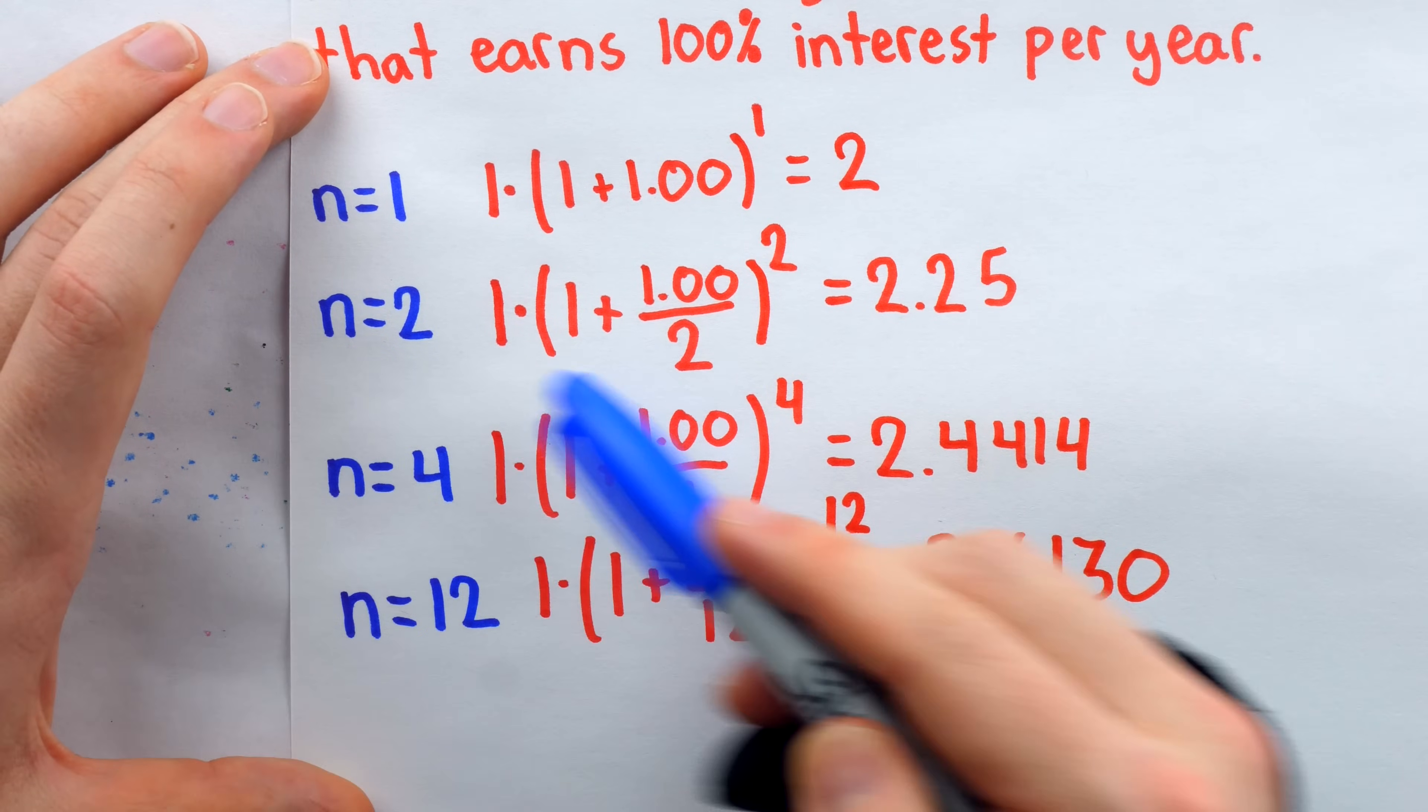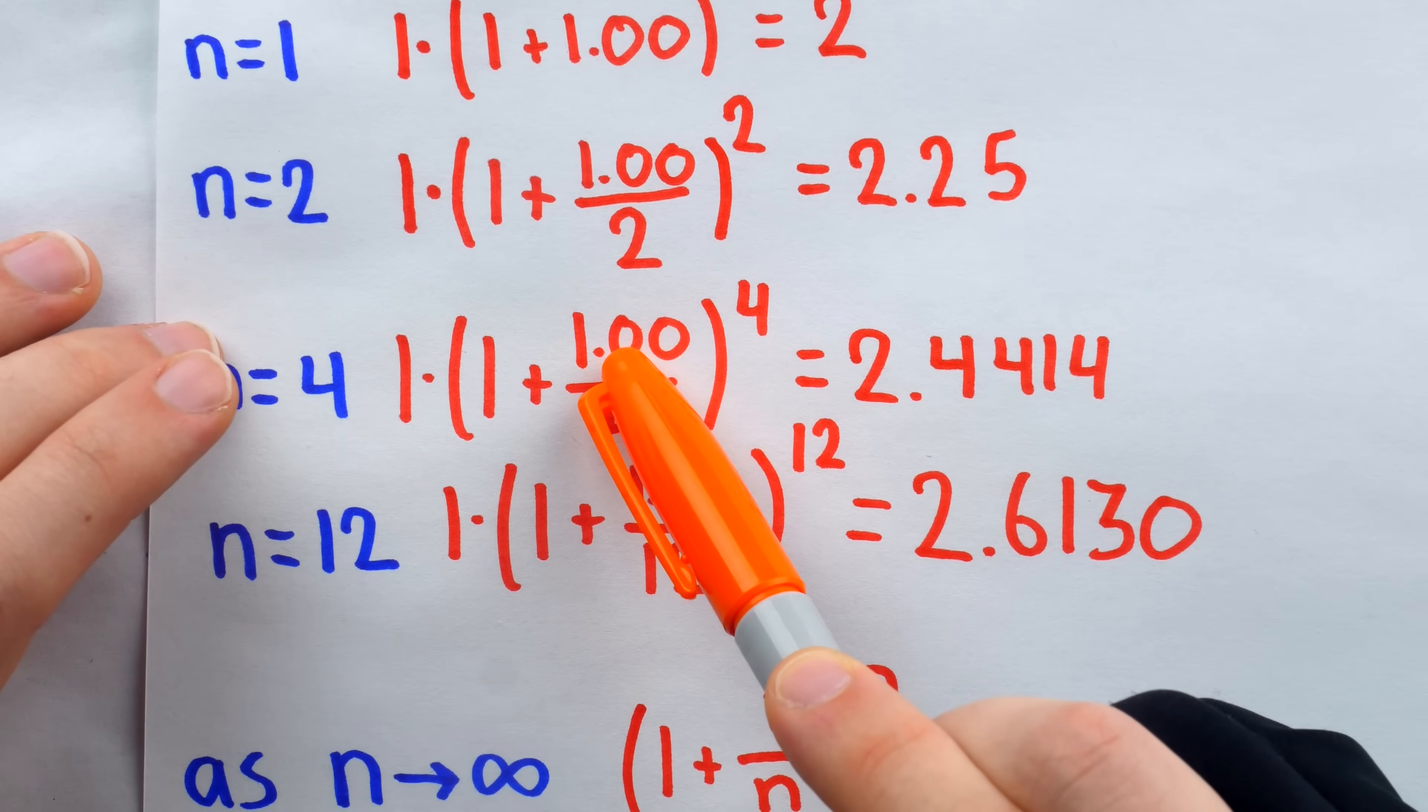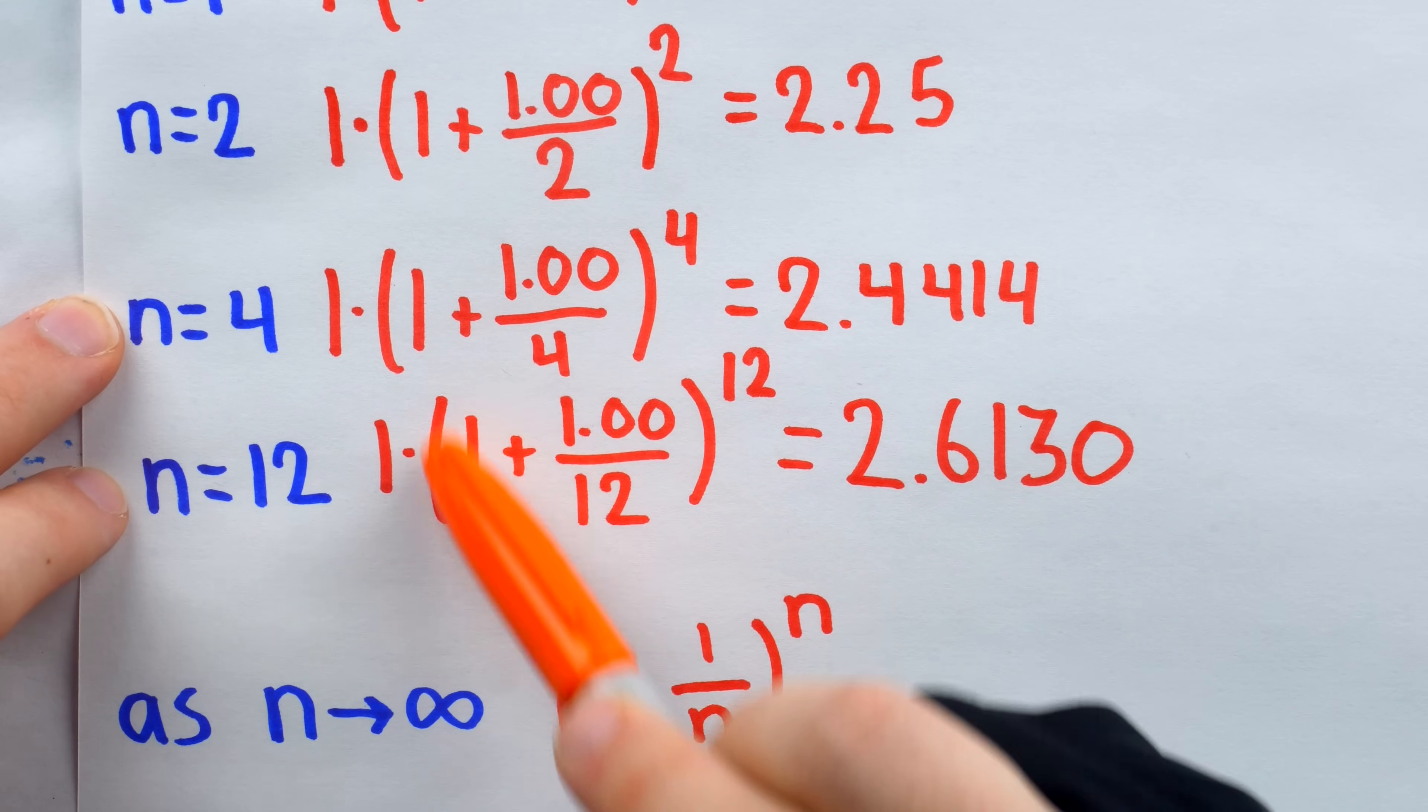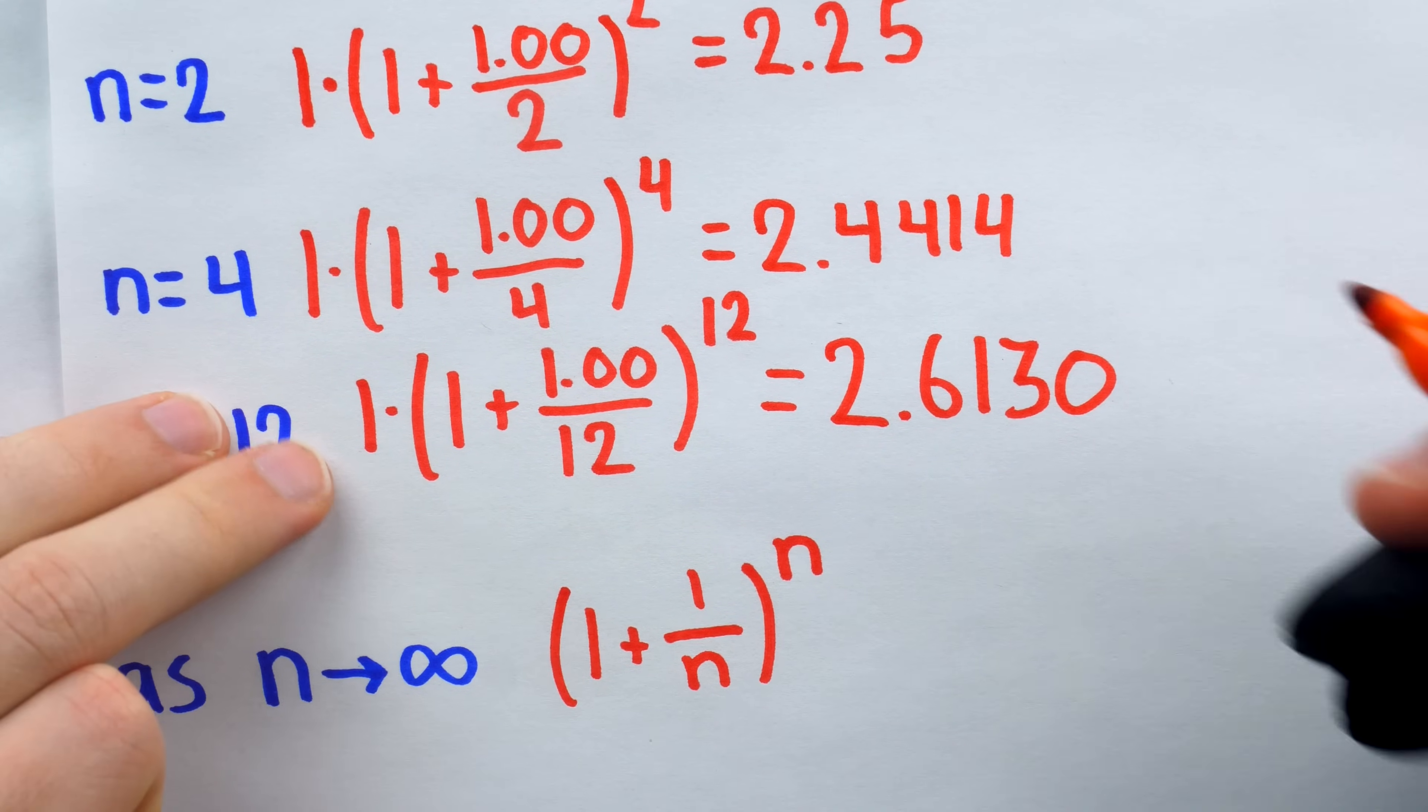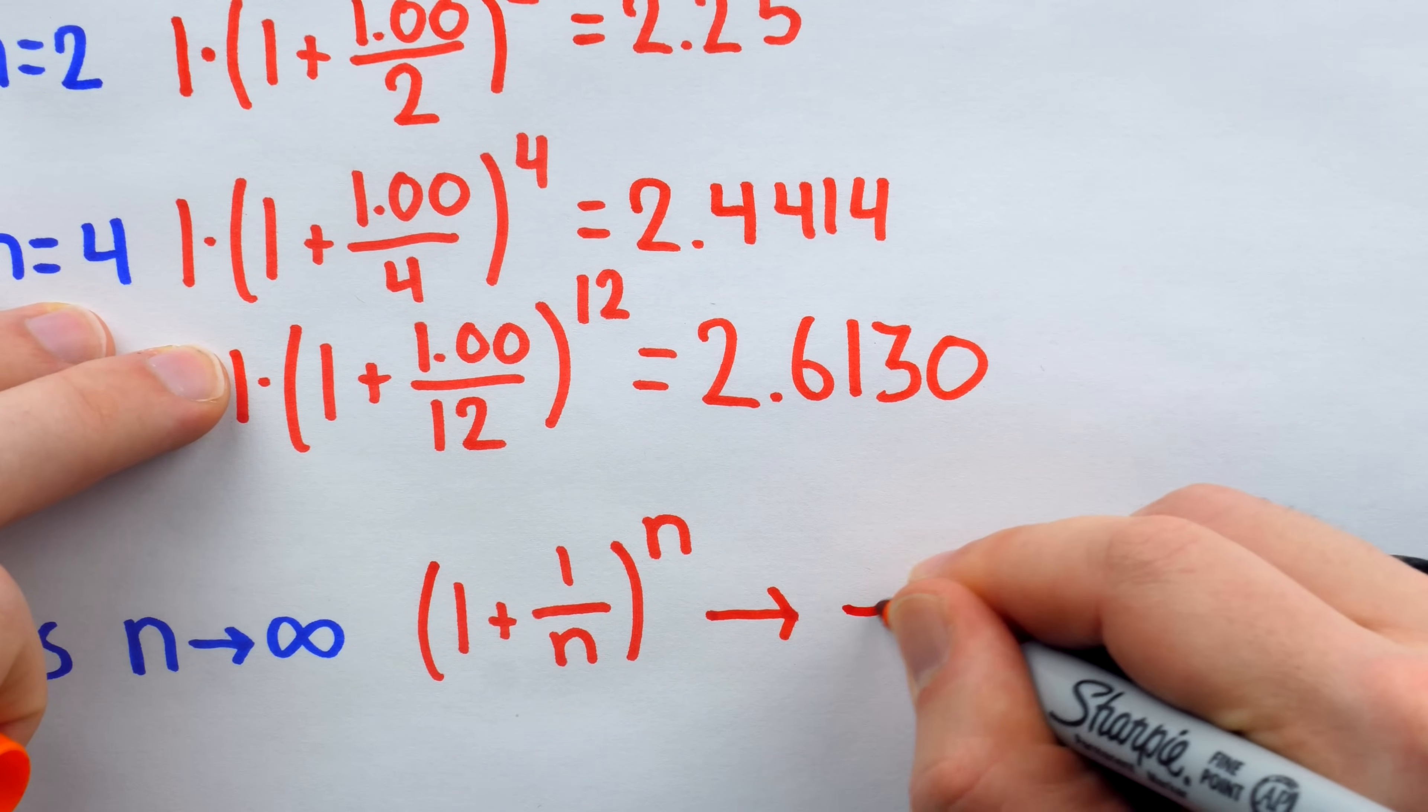Notice, as n, the number of times the interest is compounded per year, gets bigger, the amount of money in the account is increasing. This raises the natural question of what happens to the amount in the account as the compounding frequency, n, goes to infinity. Make sure you know how this is the expression we've been dealing with, just with n in place of a definitive number. And as it turns out, as n gets arbitrarily large, approaching infinity, this value, in fact, does not get arbitrarily large, even though we see the amount is growing as n gets bigger, it's going to approach that number that we call e.